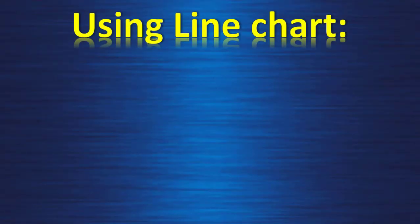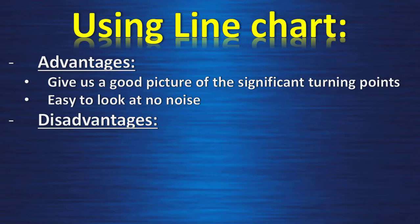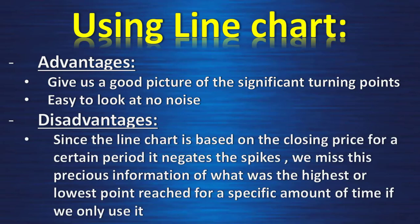Now we will see how to plot support and resistance using a line chart. Advantages: it gives us a good picture of the significant turning points in the market; it's easy to look at and there is no noise. Disadvantages: since the line chart is based only on the closing price for a certain period of time, it negates the spikes — we miss the precious information of what was the highest or lowest point reached.